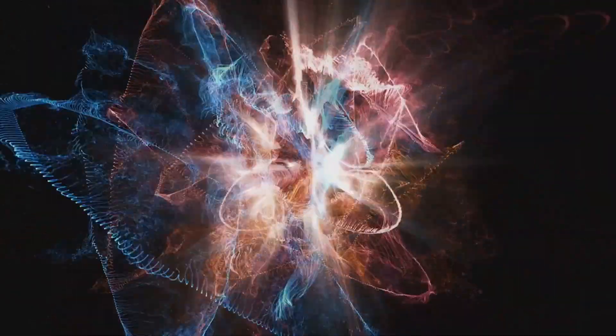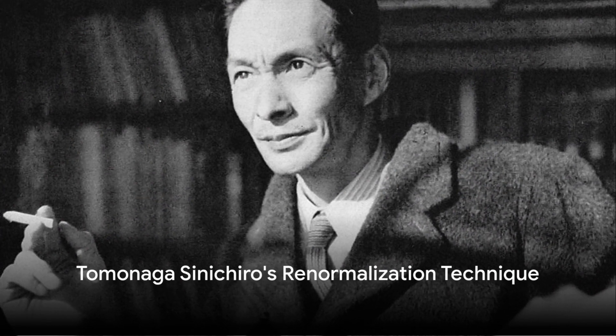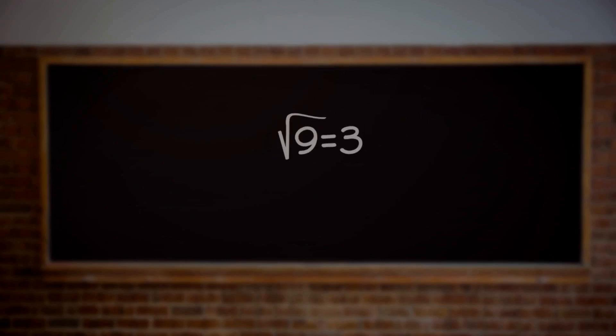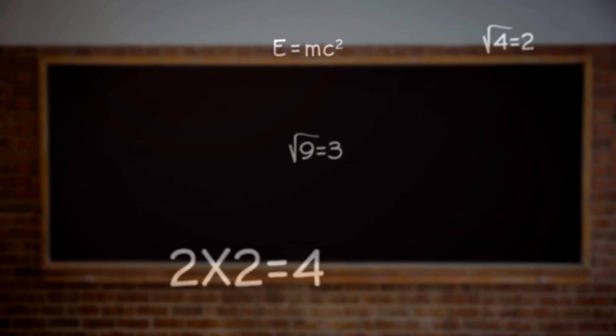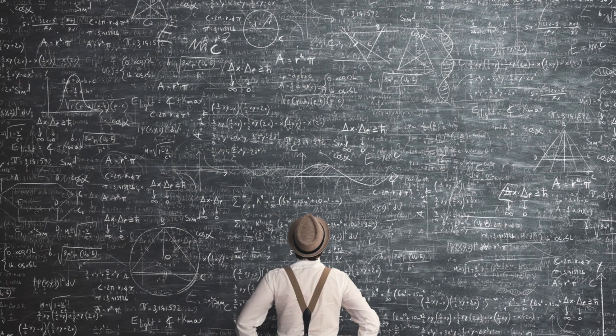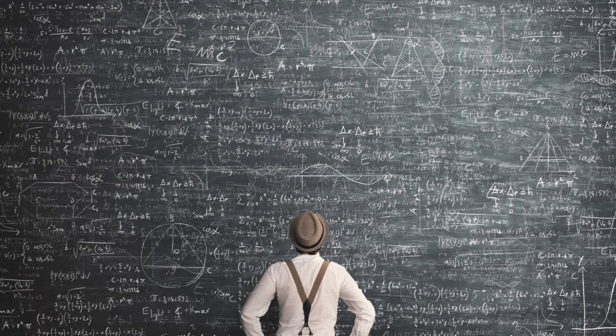On the other side of the world in Japan, Tomonaga Sinichiro was developing his own solution for managing the infinities that surfaced in QED calculations. His technique, which we now call renormalization, addressed these mathematical challenges, ensuring that calculations produced finite and meaningful results. The contribution from Tomonaga played a crucial role in resolving many theoretical complexities.